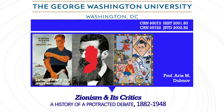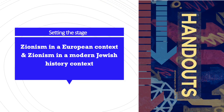Hello everybody and welcome to our first recorded lecture in the class Zionism and Its Critics. Today's class, like all the other recorded lectures, will be accompanied by a handout, so I really recommend using this as the skeleton or outline of our lecture. Today's topic, pretty much setting the stage for the rest of the class, is Zionism in a European context and Zionism in a modern Jewish context.